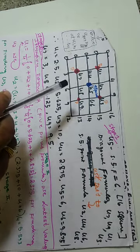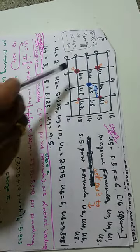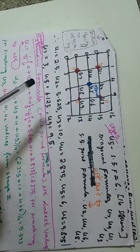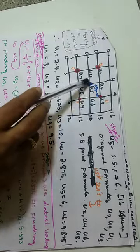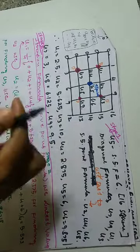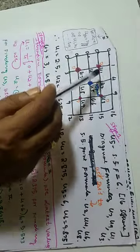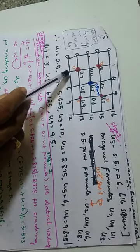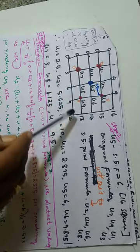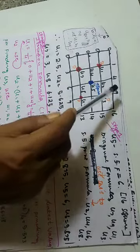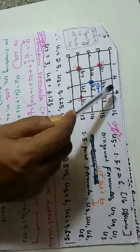Let us take an example on solving the Laplace equation at the points u1, u2, u3, u4, u5, u6, u7, u8, u9. Given that the boundary conditions are like this — suppose u is the temperature: temperature at this point is 0, at this point is 3, at this point is 12, at this point is 15, and at this point is 9.